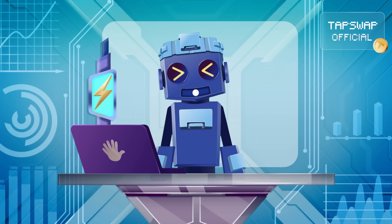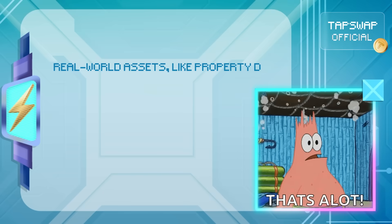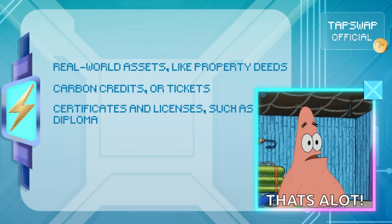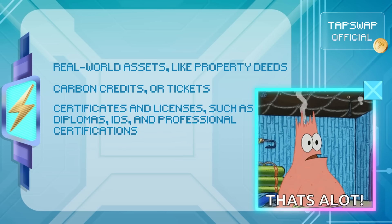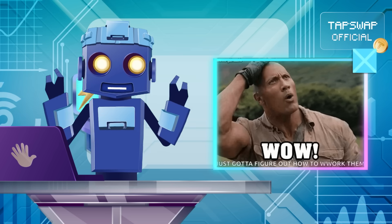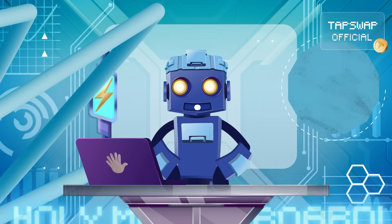What can you bring into the on-chain world? Real-world assets like property deeds, carbon credits or tickets; certificates and licenses such as diplomas, IDs and professional certifications; your digital identity; even supply chains to track products as they move from manufacturers to consumers.